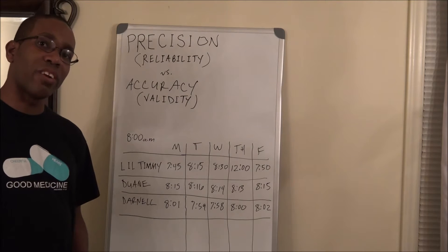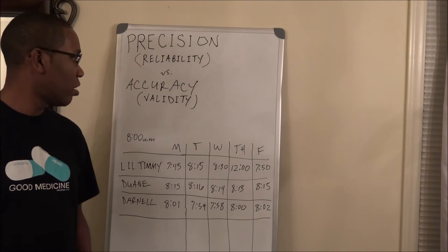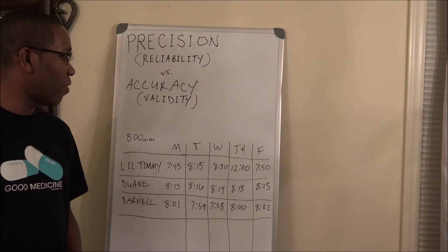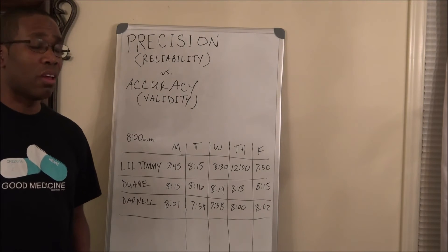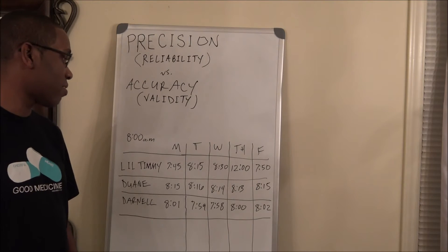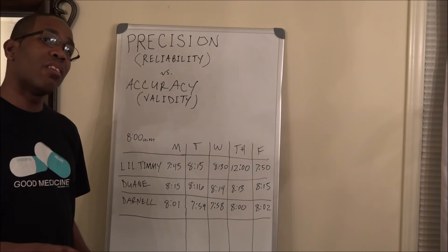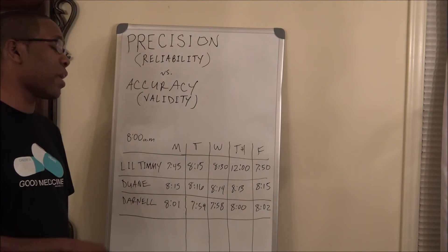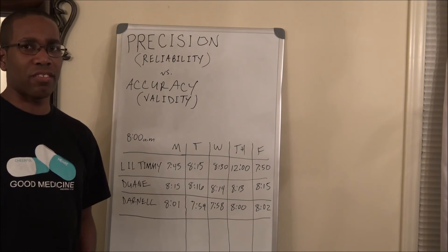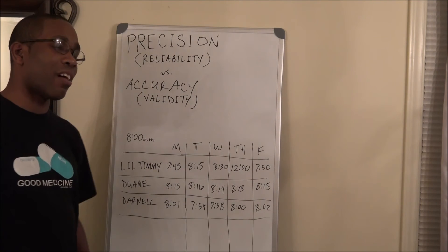Now, in the case of Darnell, Darnell shows up on Monday at 8:01. On Tuesday, he shows up at 8:59. On Wednesday, he shows up at 7:58. On Thursday, he shows up at 8 o'clock. And on Friday, he shows up at 8:02. All those times are pretty much right near 8 o'clock when class starts. He's pretty much on time every day, right when class starts. So he's going to be accurate and valid because all those times are right when class starts — that's the intended goal of 8 o'clock.